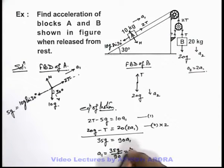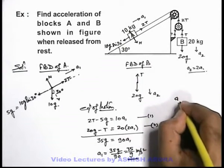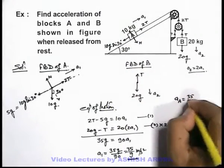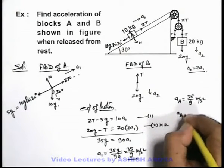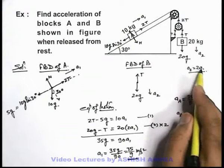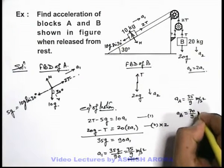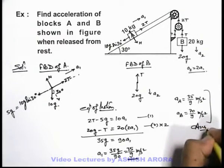That is, a1 = 35g/9 meters per second squared. So the acceleration of block A equals a1 = 35g/9 m/s². The acceleration of block B, which is twice a1, can be written as 70g/9 meters per second squared. So these are the answers to this problem.